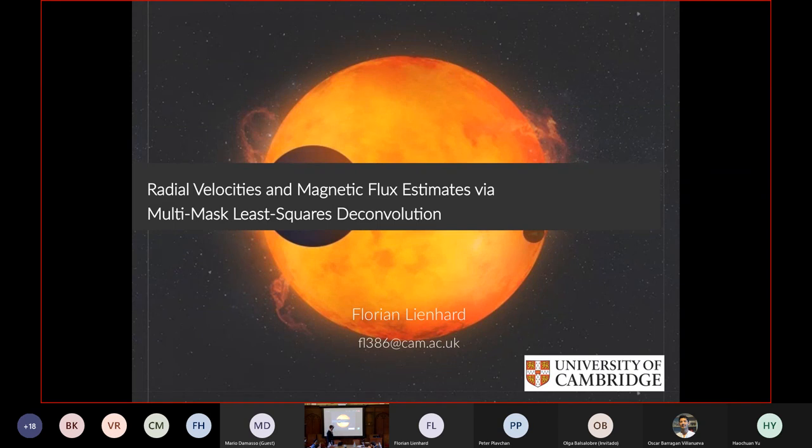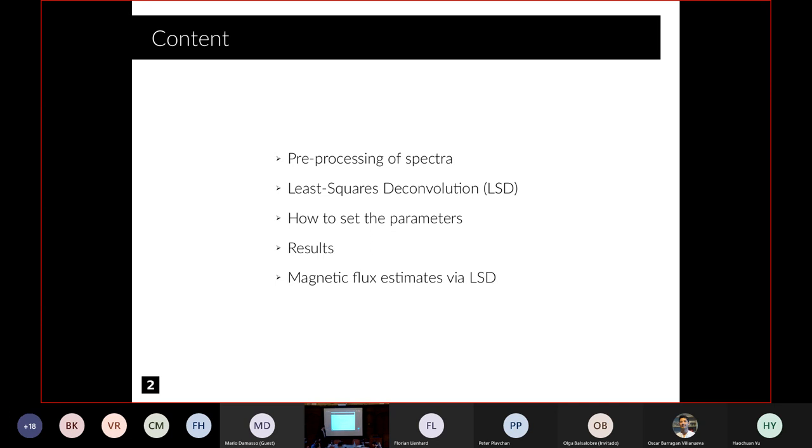There's also a code which we will make publicly available. It's all in Python, so it's very easy to use. I'm going to start from the 2D shell spectra, go through the whole process until we get to the final results, and show you some examples of what LSD can do. First, pre-processing, then I'll explain what LSD actually is and how to set the parameters. This is quite important for this technique. Then some results and the extension that I mentioned.